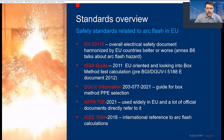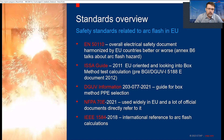The base standard in the EU is EN 50110. This is an overall standard about the electrical safety operation of general electrical installations. It is harmonized across European Union countries — better or worse — but it has Annex B6 about arc flash. There is also a guide: ISA, the International Social Security Association, made a guide for arc flash hazard.